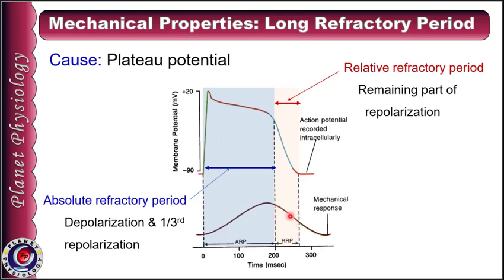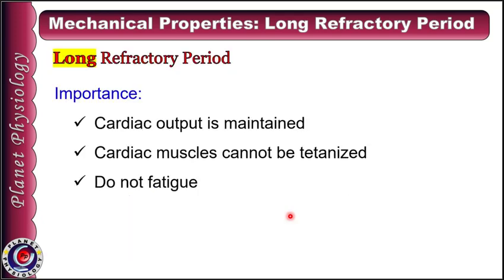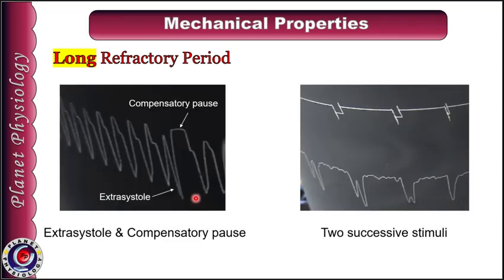This ensures maintenance of the minimum essential cardiac output. Because of the long refractory period, cardiac muscles cannot be tetanized and they do not fatigue. This long refractory property can be experimentally demonstrated in a frog's heart by eliciting extrasystole and compensatory pause in a beating heart, or by applying two successive stimuli in a quiescent heart. It can also be demonstrated by incomplete tetanus. The first graph shows extrasystole and compensatory pause, and the second graph shows two successive stimuli.